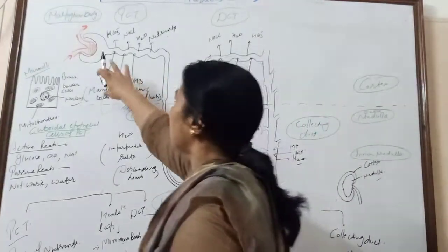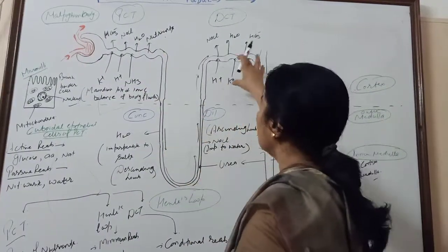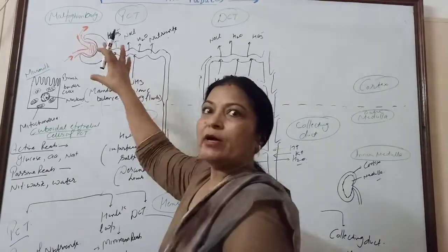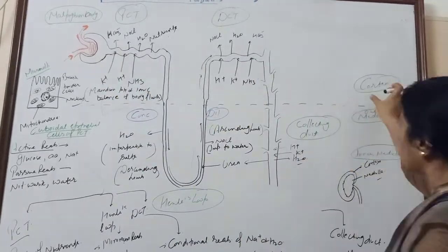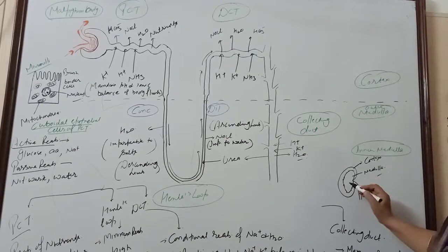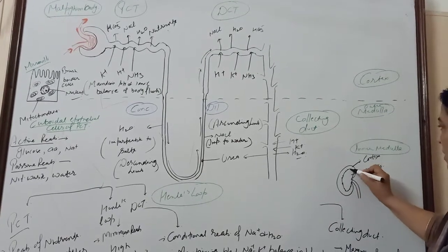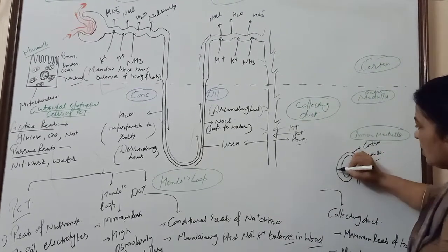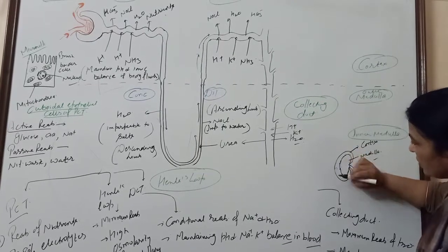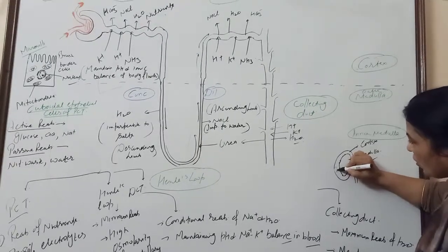This diagram is showing the positioning of the nephron in the kidney. The kidney has two parts: the cortex and the medulla. This one is the kidney, the outer cortex and the medulla. In this place, the renal corpuscle or Malpighian body.